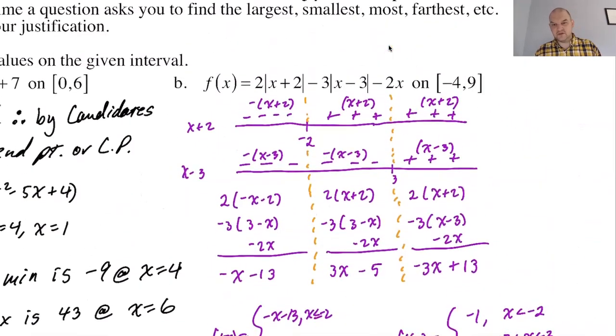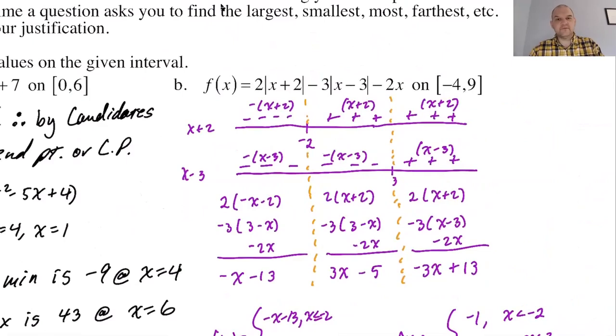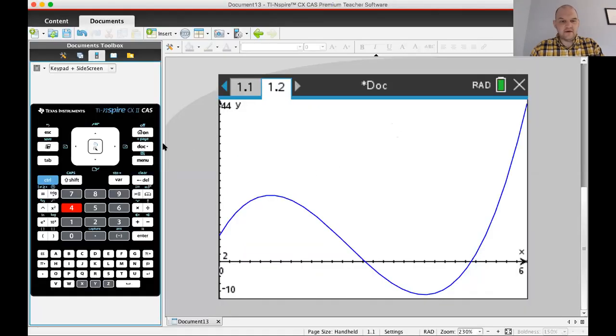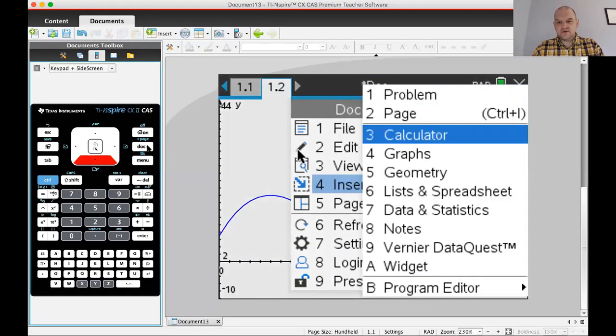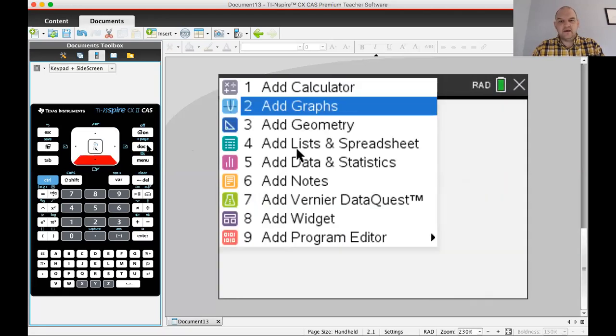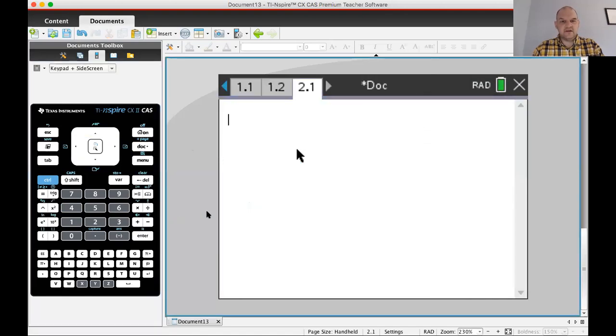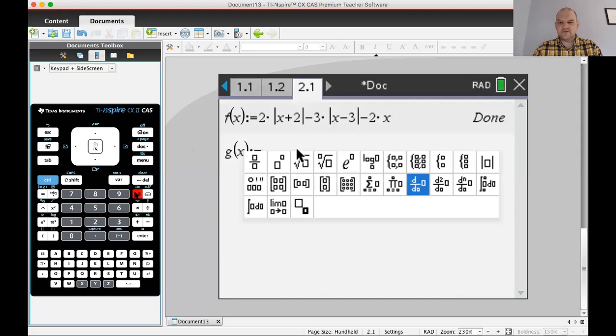I'm going to use a calculator. Don't be a hero. Let's use a calculator. Let's see if we got our piecewise function right. I'm going to add a new problem and then a calculator page. I'm going to say f of x is 2 absolute value x plus 2 minus 3 absolute value x minus 3 and then minus 2x.